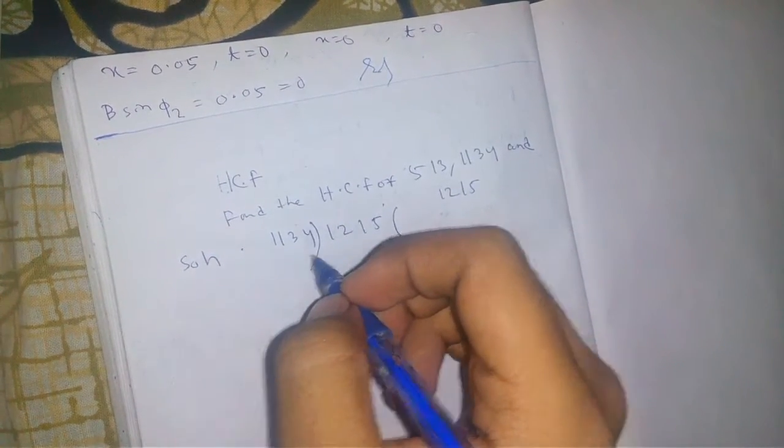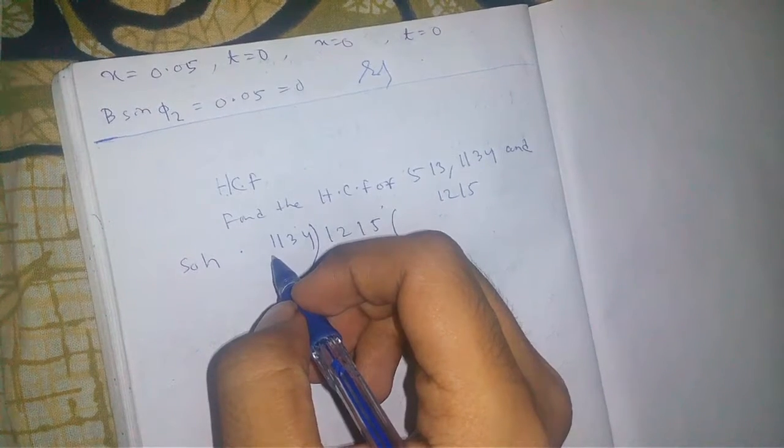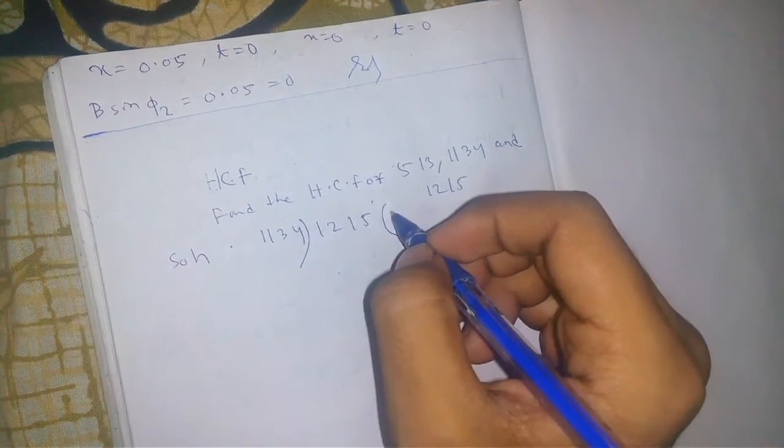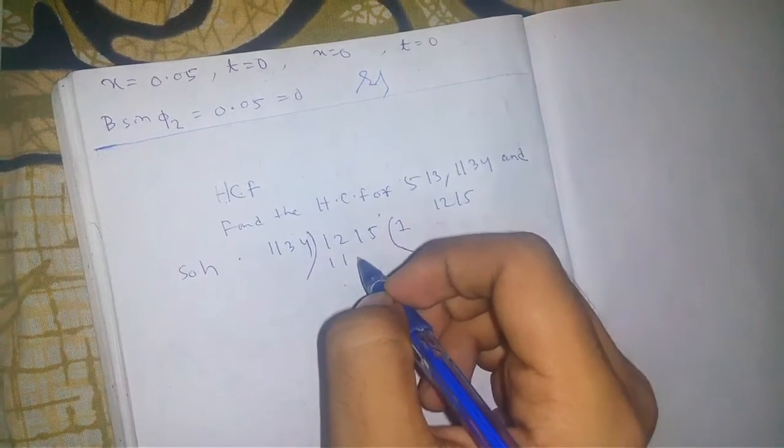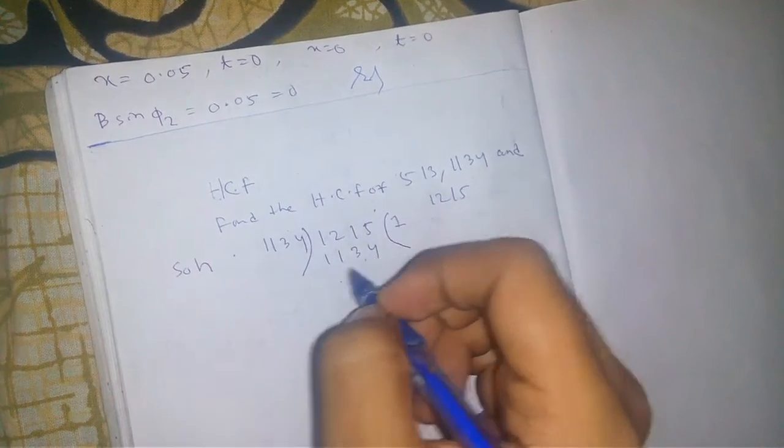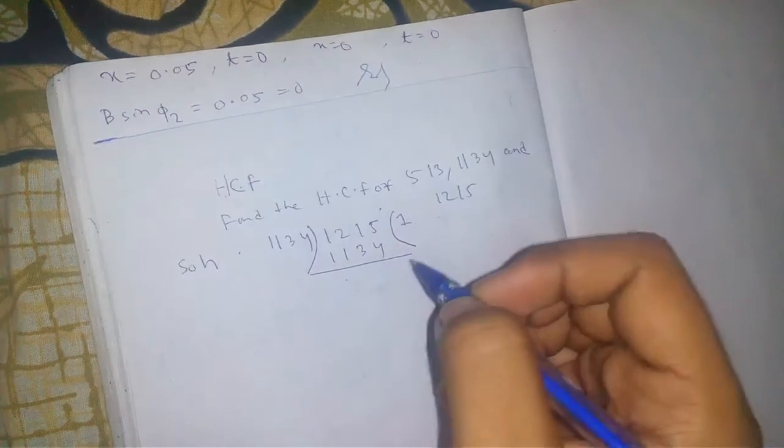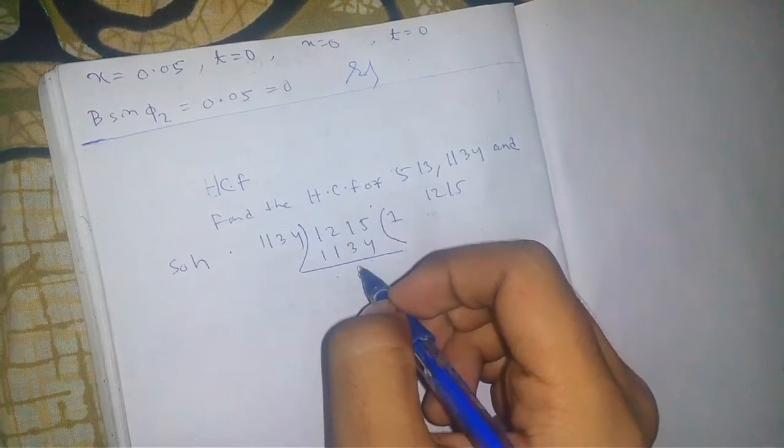So, 1 multiplied by 1134 is 1134. One is the quotient. The remainder is 81.